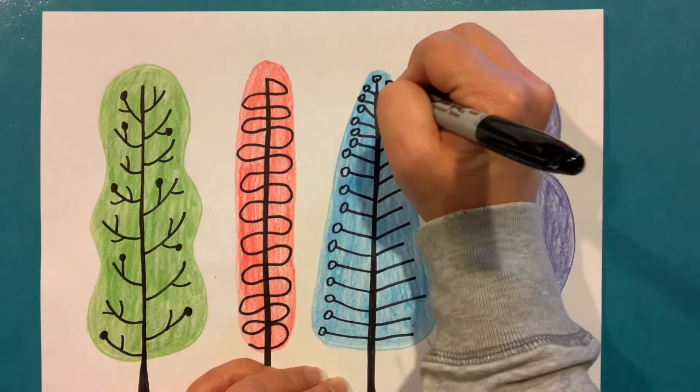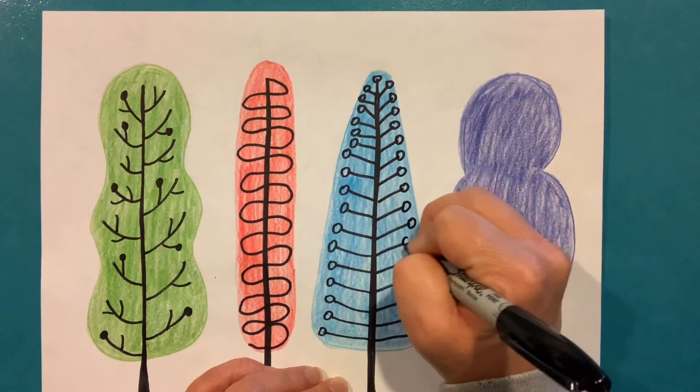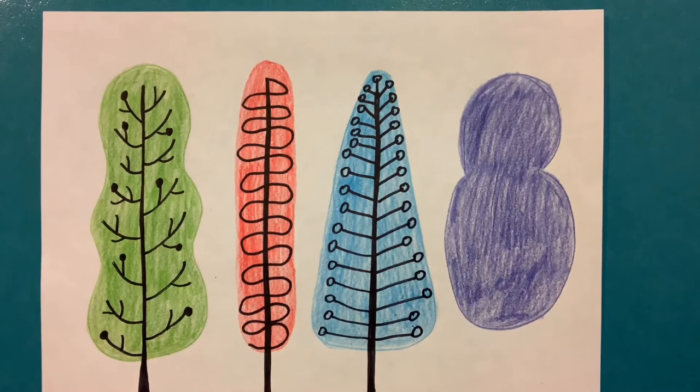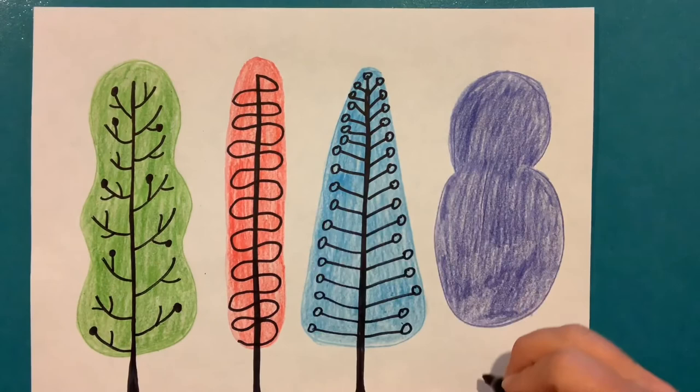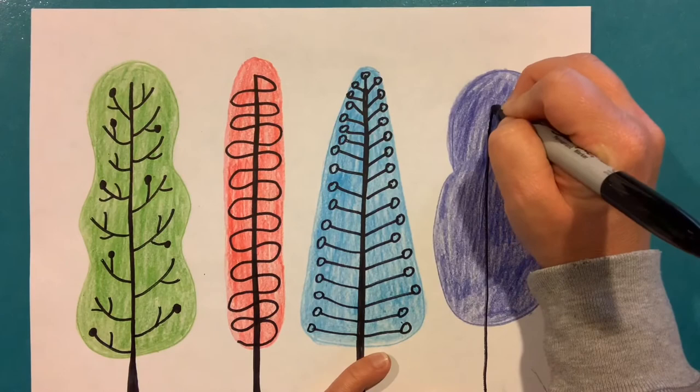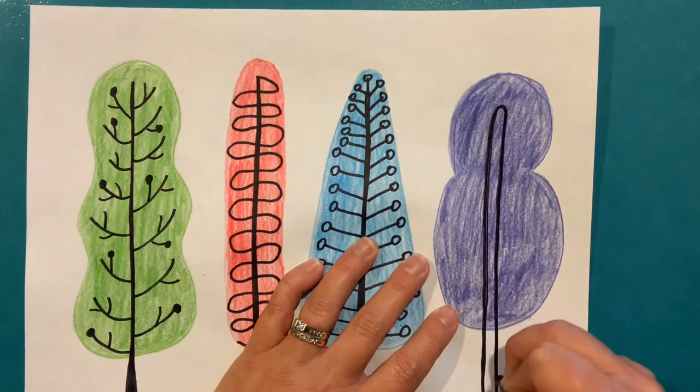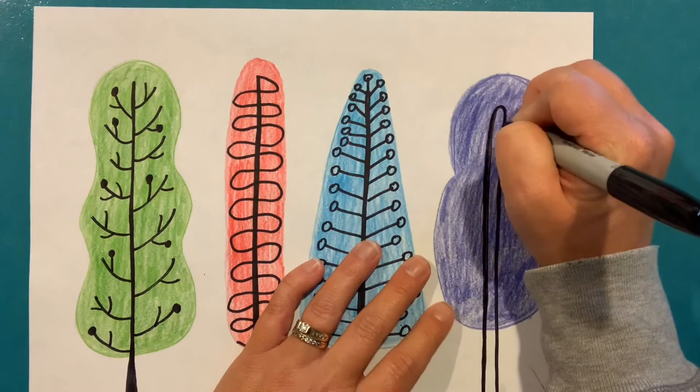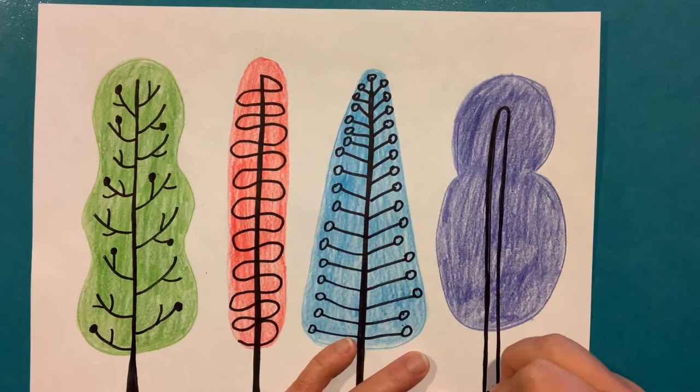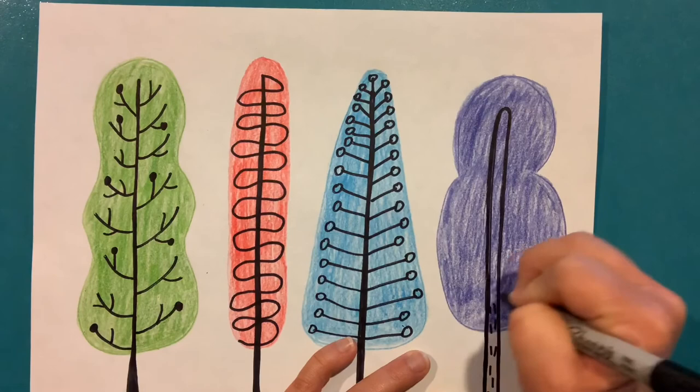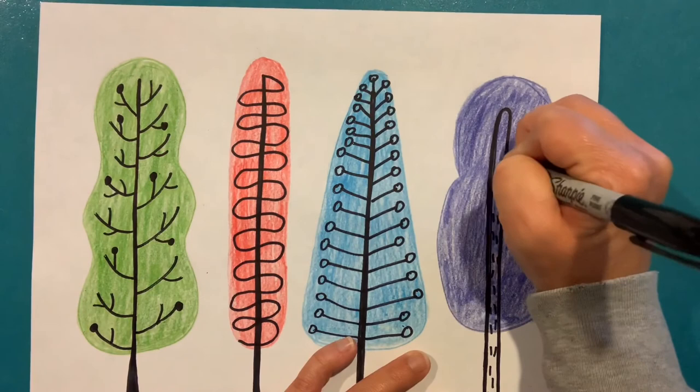We have one more shape to do, our purple shape here. For this trunk I'm not going to color it in. I'm going to make this one more of an open trunk. I'll curve it around but leave it open. I'm just going to go over it again so that it's nice and dark. I might add a little bit of texture to this one by drawing some little vertical lines along the middle of that trunk.